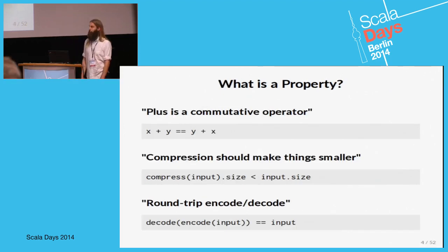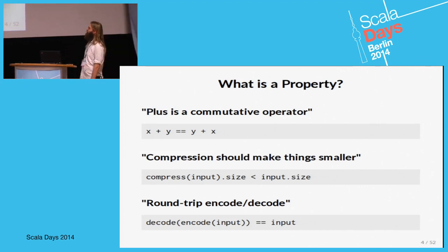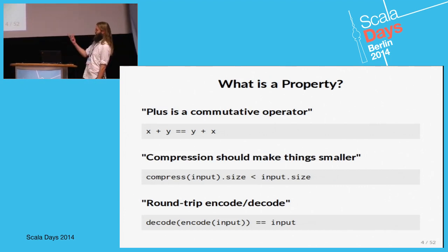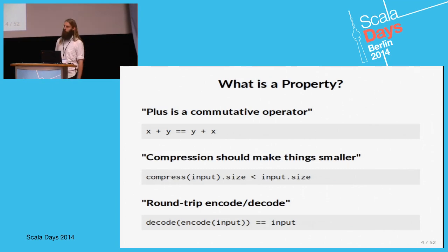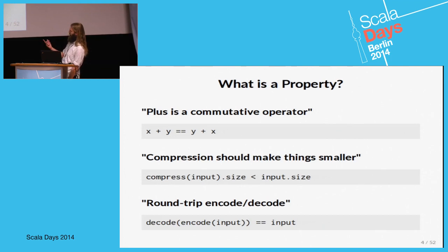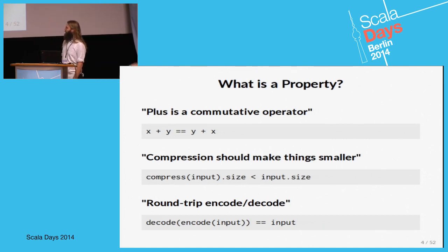Properties can be things like the plus operator should commute, or that your compress method should actually make things smaller, or that if you encode something and then decode it you should get the original content back.